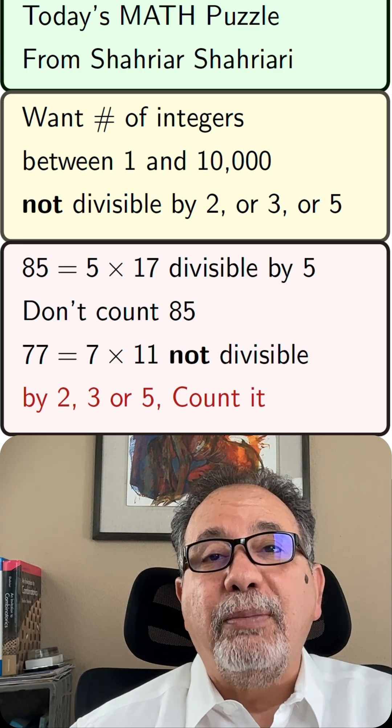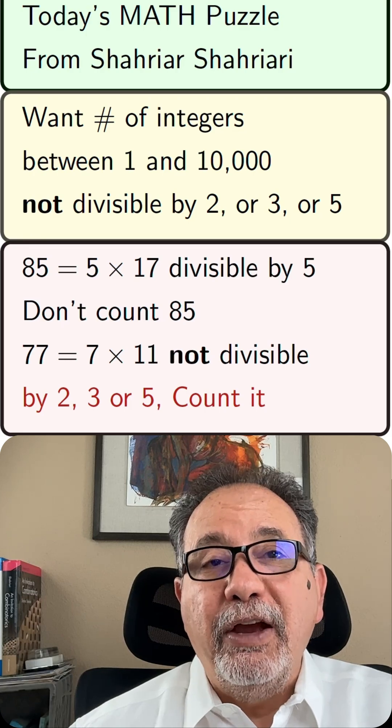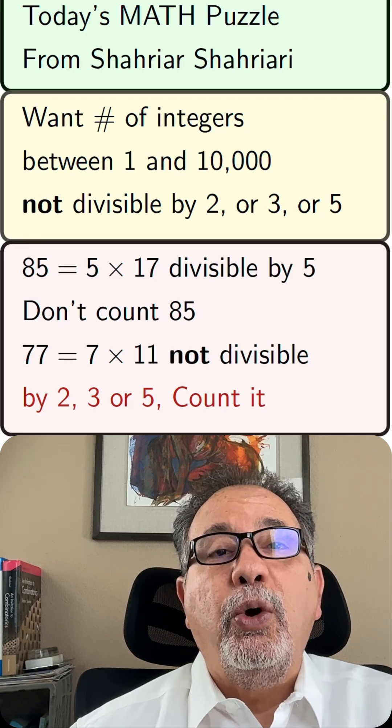So again, there are 10,000 numbers between 1 and 10,000. How many of them do not have a factor of 2, or 3, or 5?